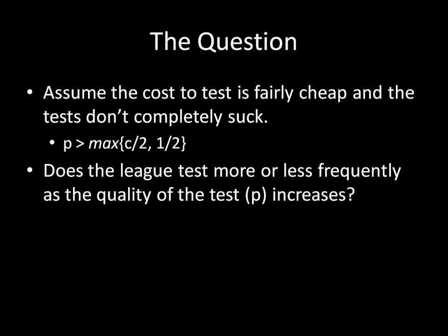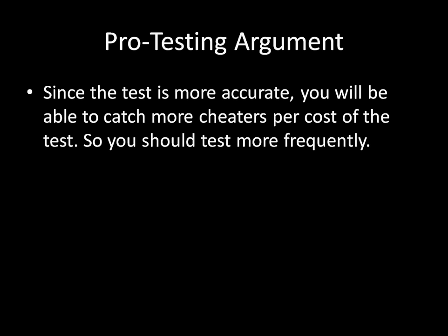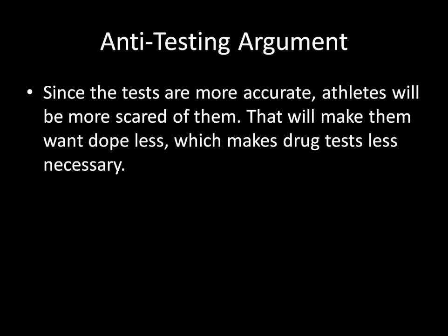There are arguments both ways. The pro-testing argument: since tests are more accurate, you can better catch cheaters per cost of a test, so you'd want to test more frequently. The anti-testing argument: since tests are more accurate, athletes will be more scared of them and will want to dope less, making drug tests actually less necessary because athletes are less willing to take the drugs.